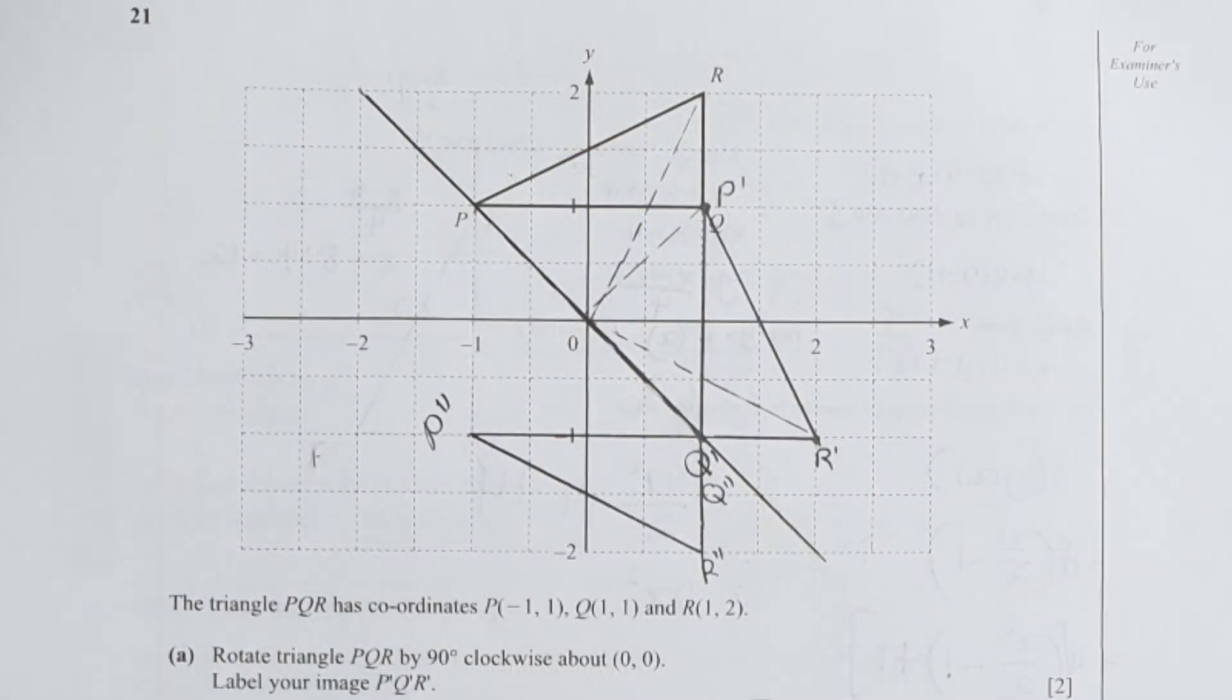For the last question, rotate your triangle PQR by 90 degrees. So I labeled it as P1, Q1, and R1.